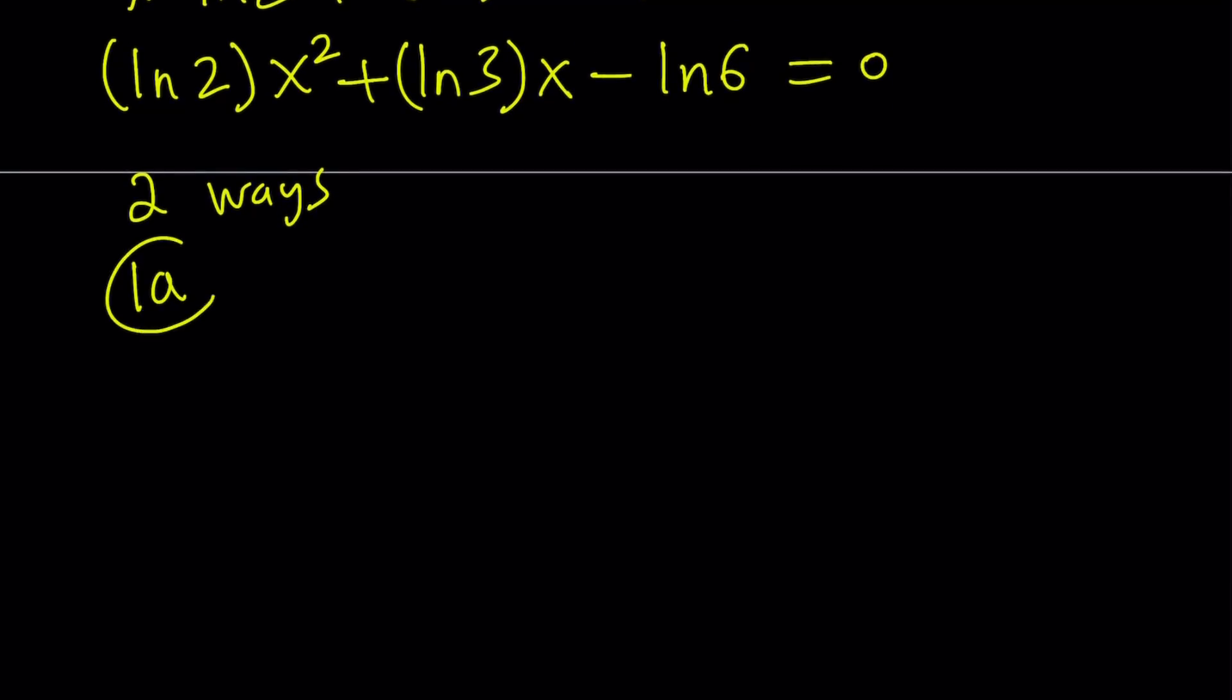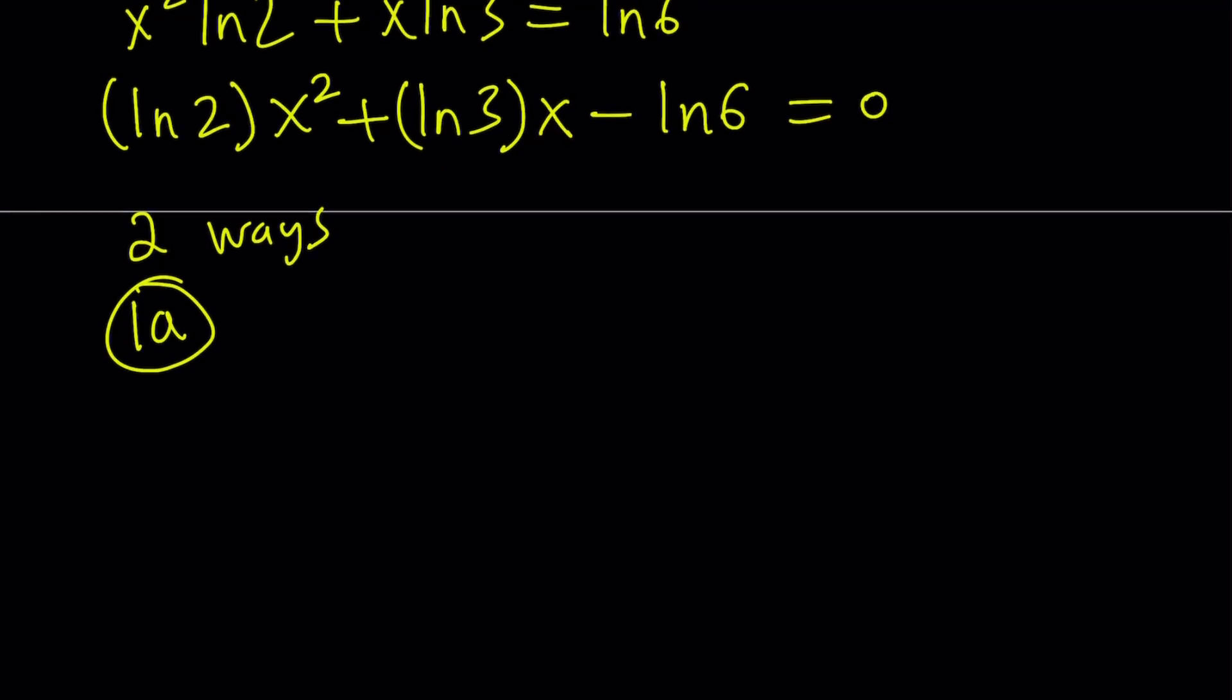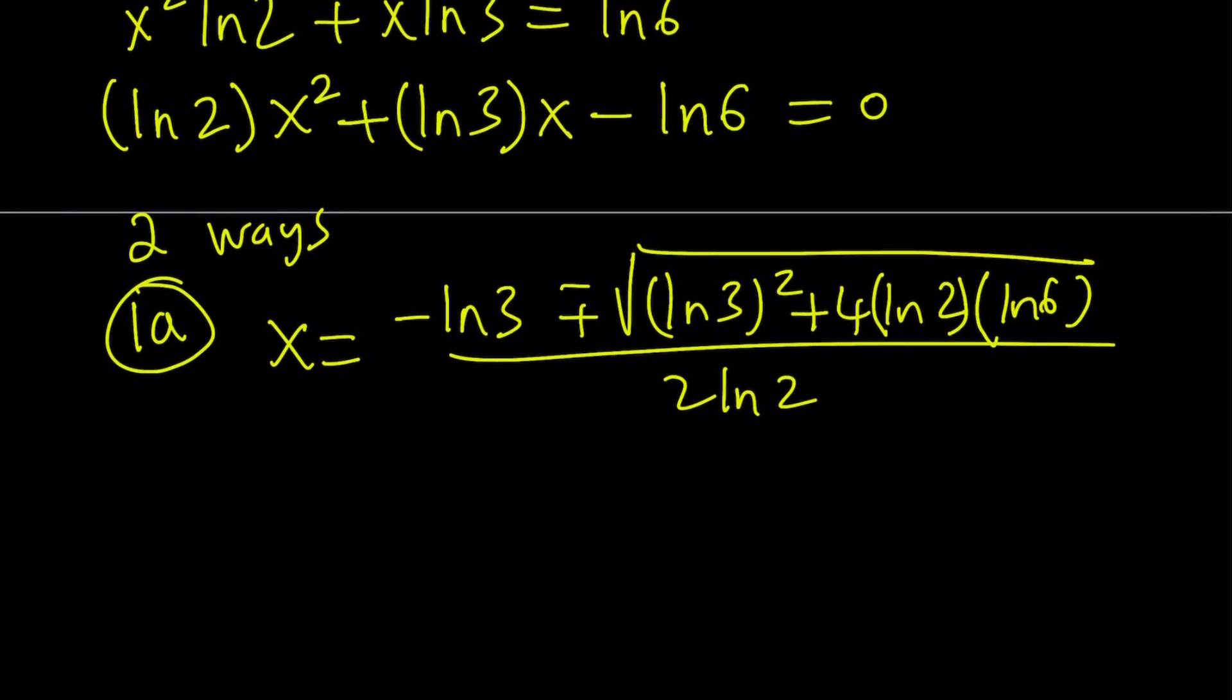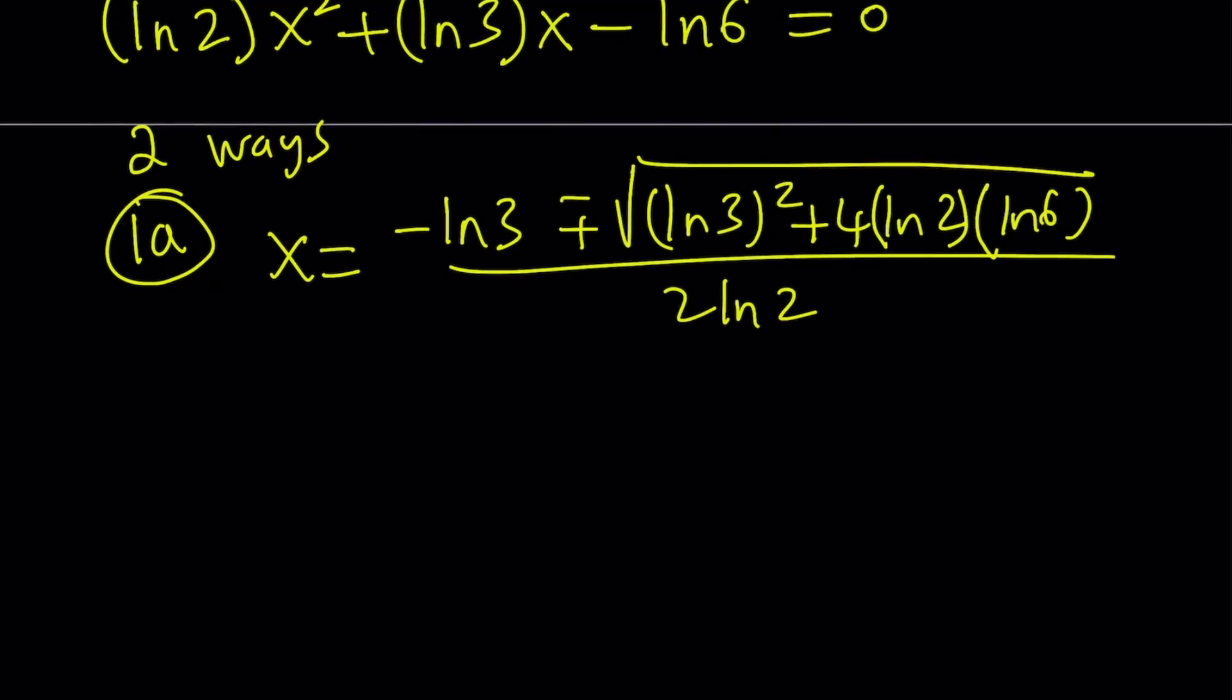Let's talk about 1a first. I'm going to use the quadratic formula. x = (-ln3 ± √(ln3)² + 4ln2·ln6) / 2ln2. By the way, (ln3)² is not ln9, that's different. I'm going to write these in parentheses so we don't get confused. Let's simplify the discriminant.